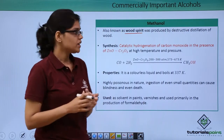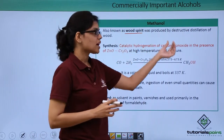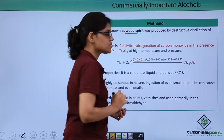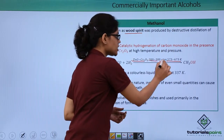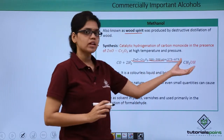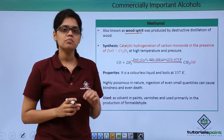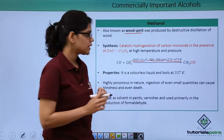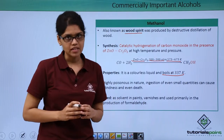Today, it is synthesized via catalytic hydrogenation of carbon monoxide in the presence of zinc oxide and Cr2O3 at very high temperature and pressure as given here. Under these conditions you get methanol. The property of methanol is that it is a colorless liquid and has a boiling point of 337 Kelvin.